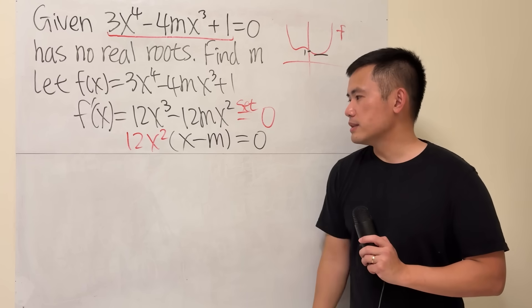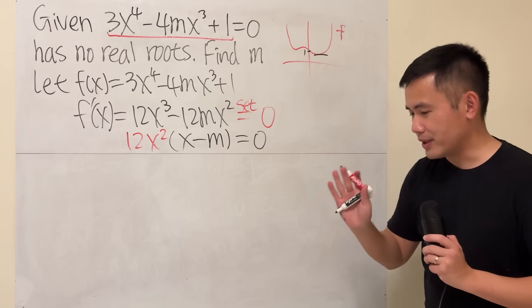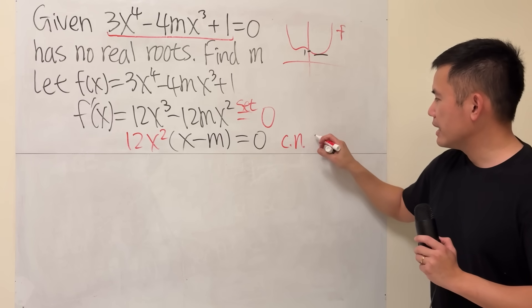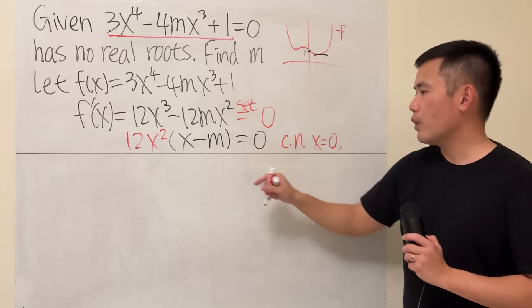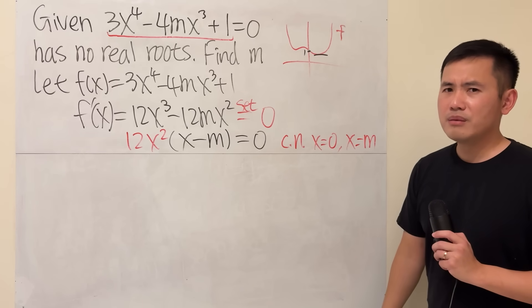From here we can see that if x equals 0 we will have our minimum—well, sorry—we will have a critical number. So I'll just denote that critical number at x equals 0 or when x equals m. These are the two possibilities.